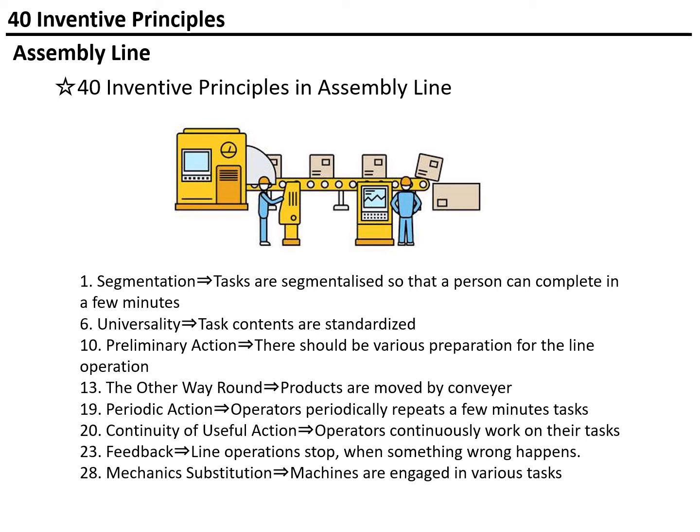Preliminary action: there should be various preparations for the line operation. The other way around: instead of the operator moving, in a normal assembly line products are moved by conveyor, and the operator keeps repeating the same tasks. Periodic actions: operators periodically repeat tasks of a few minutes. Continuity of useful actions: operators continuously work on the task, which may improve the skill of operators in their assigned sections. Feedback: line operation stops when something goes wrong, always collecting information about what is happening on the line. Mechanic substitution: machines are engaged in various tasks.